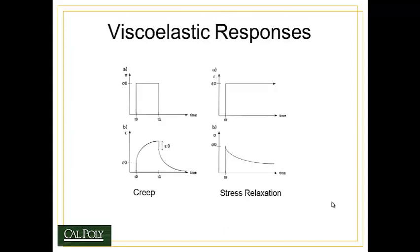There are three types of viscoelastic responses observed in materials. The first, called the creep response, occurs when a constant stress is applied over a time from T0 to T1 — producing a viscoelastic strain response — and then a return of the viscoelastic strain back to zero after time T1 when the stress is released.